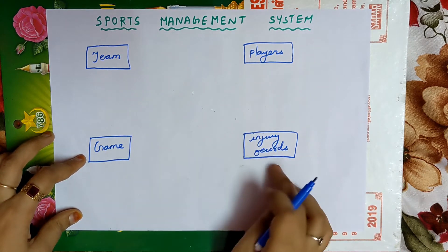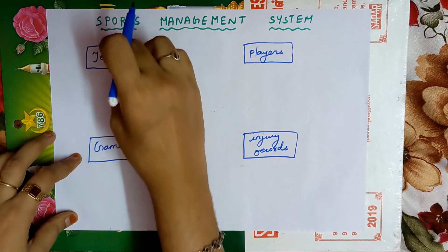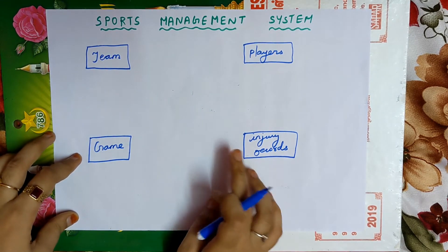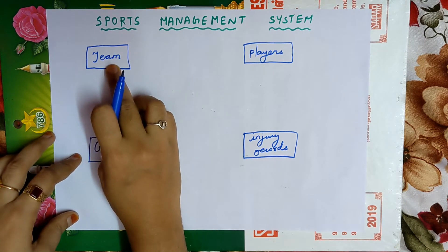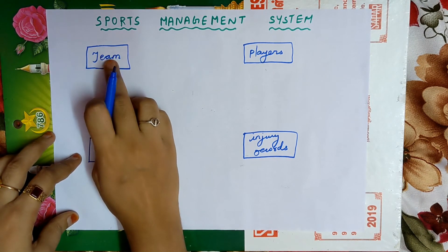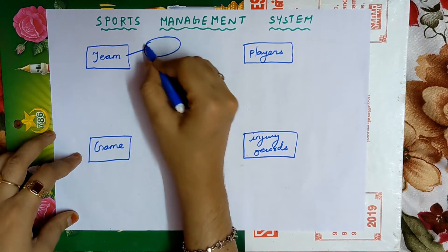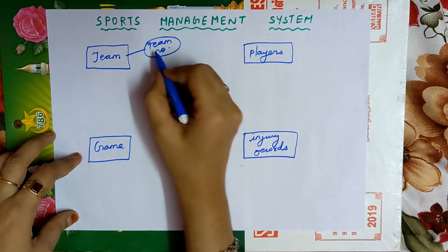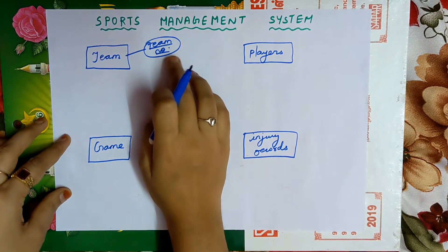The second step is to write the corresponding attributes for each entity. An attribute must be written inside an oval shape. For the team entity, one attribute is team number, which must be underlined because it is a primary key.